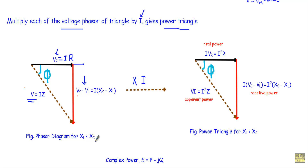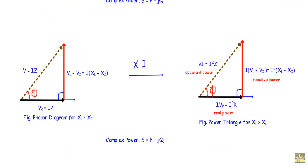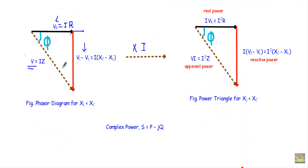When XL is greater than XC, on the horizontal axis we take VR which is in phase with the reference current I. VL minus VC is represented in the upward direction. The phasor sum of VR and VL minus VC gives the applied voltage phasor V at a right angle, forming a voltage triangle with components VR, VL minus VC, and V.